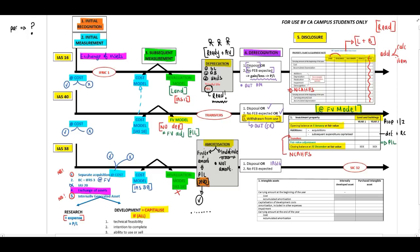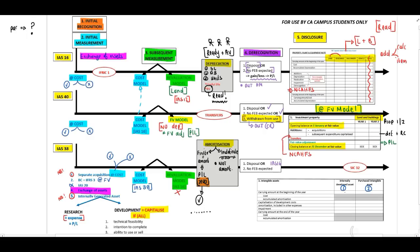For the disclosure of intangible assets, it is extremely important to include two columns: one for internally generated assets and one for other assets. Similar to your PPE note, leave sufficient space for additional lines such as a transfer to non-current assets held for sale, and remember to include your basic calculations.